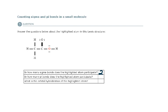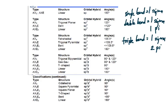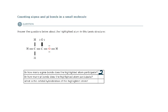How many pi bonds does the highlighted atom participate in? There are no double or triple bonds that this oxygen atom participates in. The only place you have pi bonds is either one pi bond in a double bond or two pi bonds in a triple bond. So this would be zero.